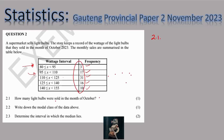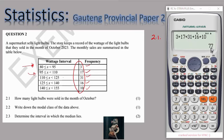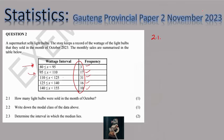It's all about adding the frequency values together to find the total. Taking out the calculator, the total number of light bulbs sold across all wattage intervals is 77 light bulbs.